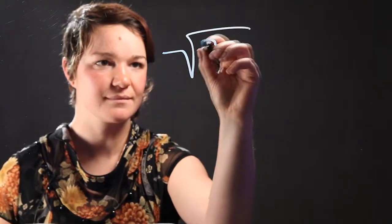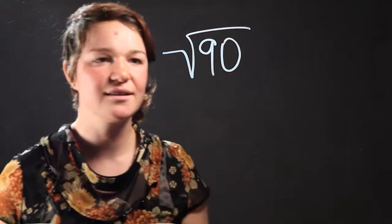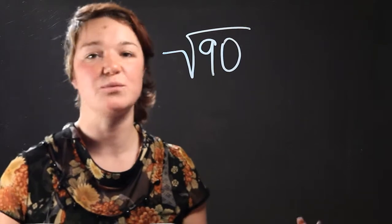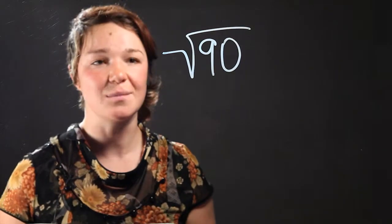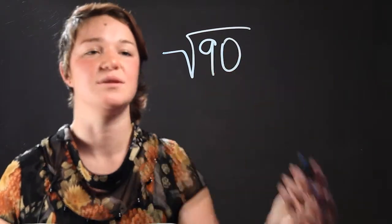Let's use an example like radical 90. Now, this might look like a nightmare at first. I mean, what do we do with it? That's a big number, and then there's this weird symbol above it.